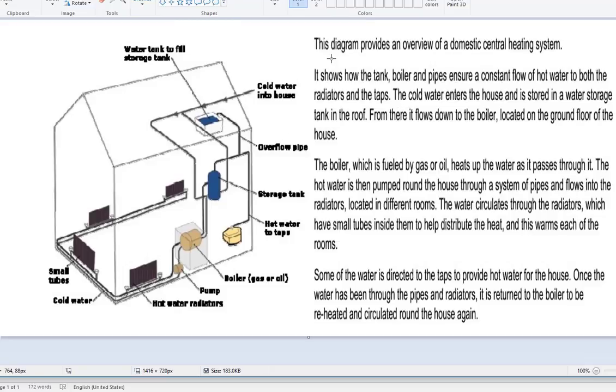Let's look at the overview. This diagram provides an overview of the domestic central heating system. Nothing wrong there. To the point. It doesn't go into analysis. It just tells us what the diagram is going to show.